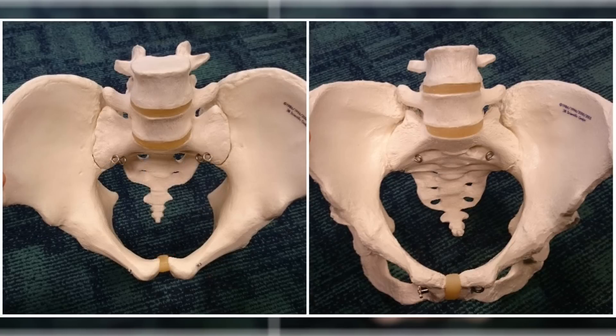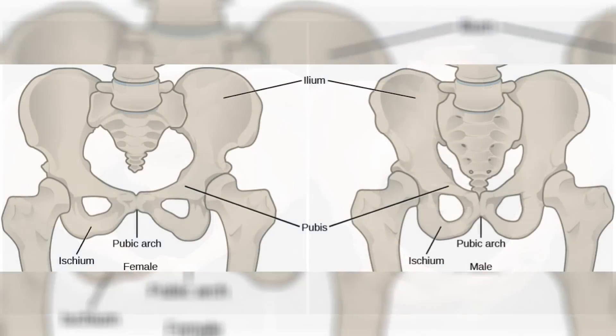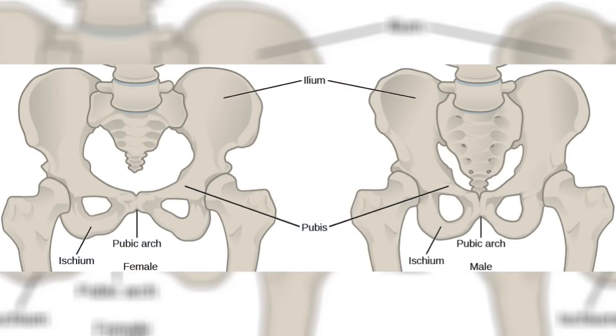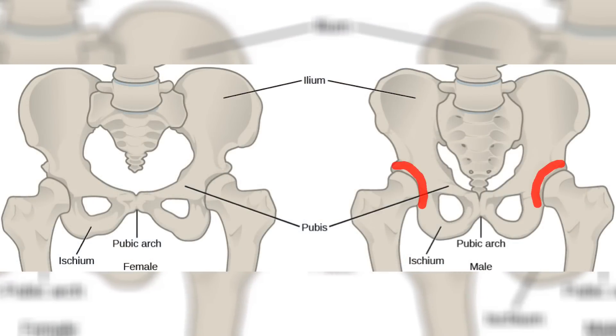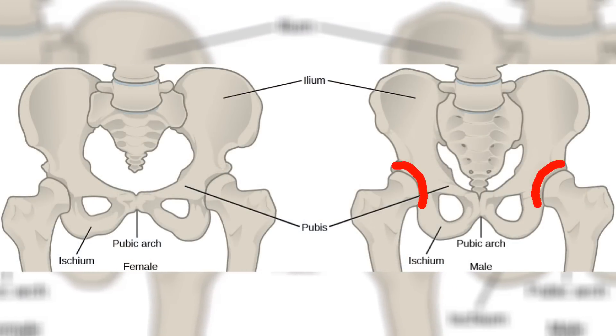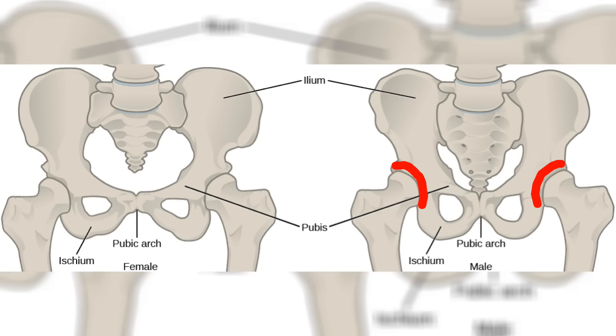Finally, the acetabulum — the ball socket which secures the head of the femur or leg bone — is usually larger in males than it is in females.